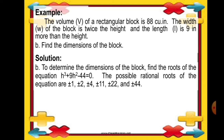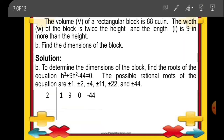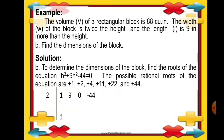Let us try 2. We write the coefficients 1, 9, 0, and negative 44. Bringing down 1: 1 times 2 is 2; 9 plus 2 is 11; 11 times 2 is 22; 22 plus 0 is 22; 22 times 2 is 44; 44 plus negative 44 is 0. Since 2 is the only rational root of the equation, the height of the rectangular block is 2 inches.